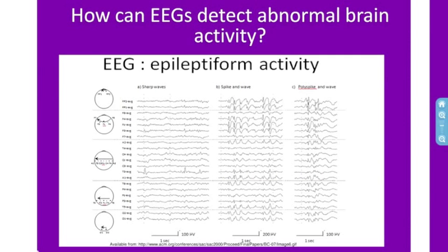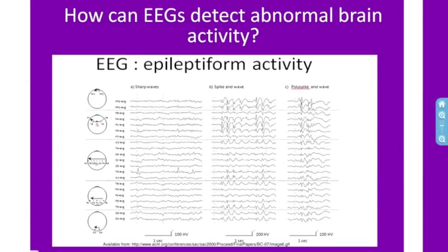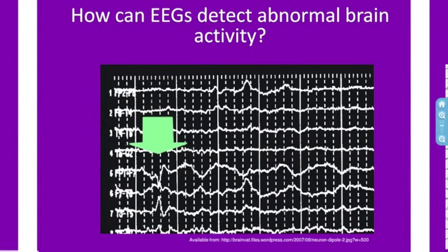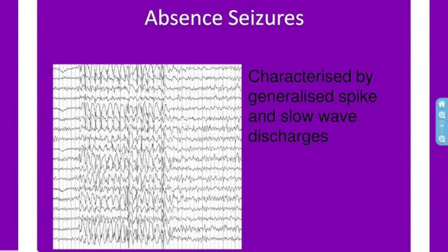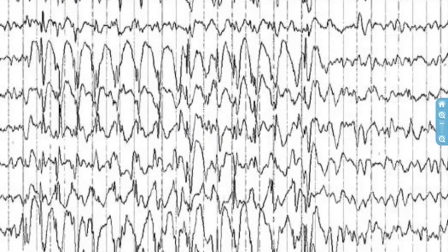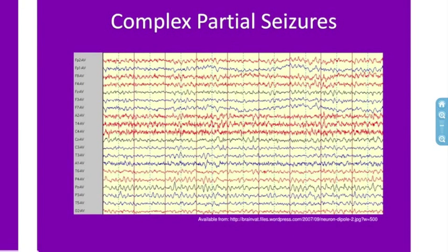Further clues to brain status can also be seen by analyzing the background EEG activity. In abnormal EEGs, there may be slowing of the waves not consistent with the behavioral state of the person. Significant asymmetry is also suggestive of abnormal brain activity. This is an example of a left temporal lobe sharp wave in an epileptic patient. This slide shows an EEG trace of a patient with an absence seizure, characterized by generalized spike and slow wave discharges. This is a recording of a complex partial seizure, caused by abnormal electrical activity in a specific part of the brain; in this EEG trace we can see the abnormality localized to the temporal part of the brain.